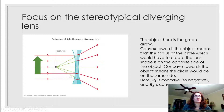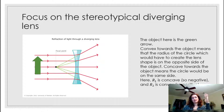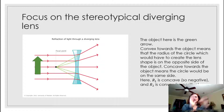Remember: convex towards the object means that the radius of the circle which would create the lens shape is on the opposite side from the object — the lens bulges towards it. So if my hand is the object and the lens is here, the center of the circle would have to be over on the opposite side. Convex towards the object means it bulges towards the object, so the center of the circle is on the far side.